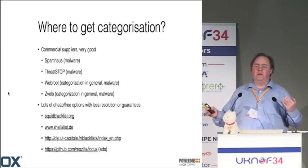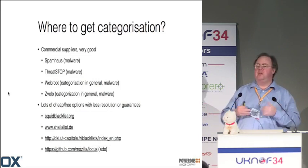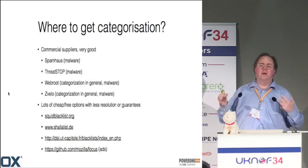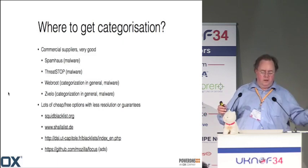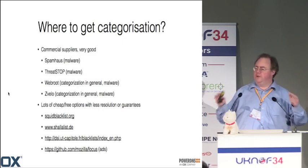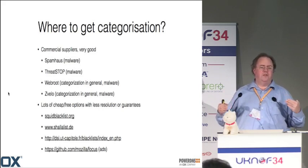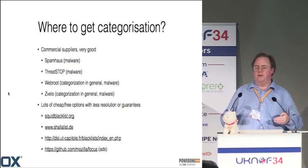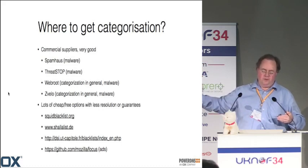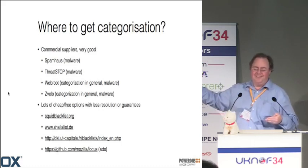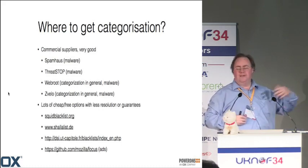The first step is figuring out for each domain name: is this good, is this bad, what category is it in? This is a lot of work. There are dedicated companies like Spamhaus and Threatstop for malware, and companies like WebRoot and Zvilo that categorize each URL into 89 categories with subcategories. Someone has to do this job — these people are very dedicated and are the top providers.